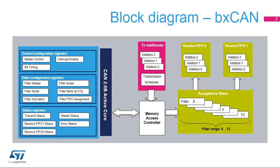This simplified block diagram of the CAN shows its basic functional and control features. Three types of registers: control configuration registers, filter configuration registers, and status registers. Three transmit mailboxes are provided to the software for setting up messages. The transmission scheduler decides which mailbox has priority to be transmitted first. The BX CAN provides 14 scalable and configurable identifier filters for selecting incoming messages. Two receive FIFOs — FIFO 0 and FIFO 1 — are used by hardware to store incoming messages, and each FIFO can store three complete messages. The FIFOs are managed completely by hardware.